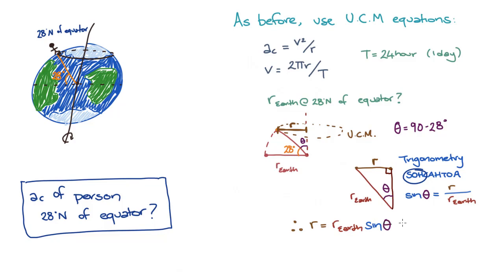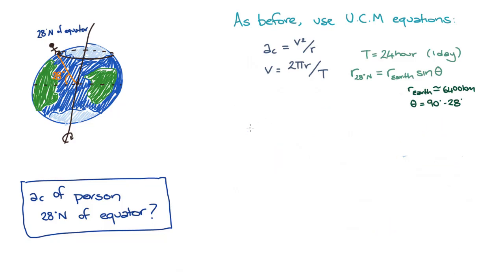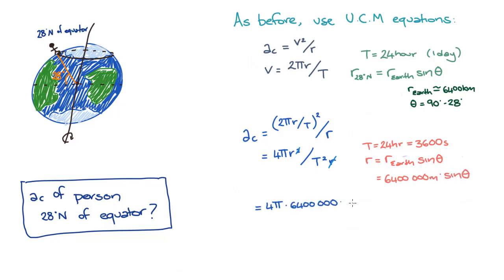As before, we can substitute our equation for velocity into our equation for centripetal acceleration. Big T is still 24 hours or 3600 seconds, and r is the radius of the Earth times sin theta, or 6.4 million meters times sin theta. Now, we could plug these numbers into a calculator to get our answer.